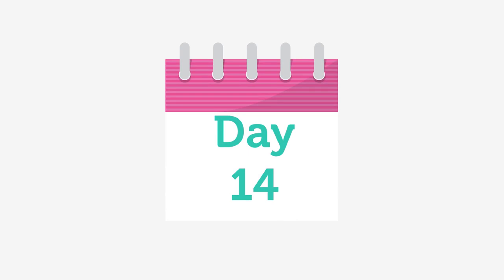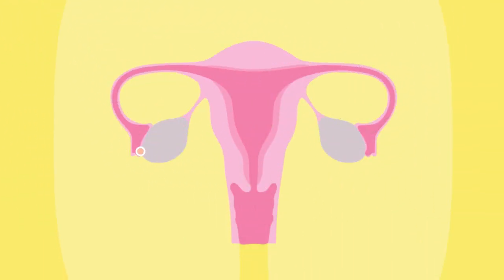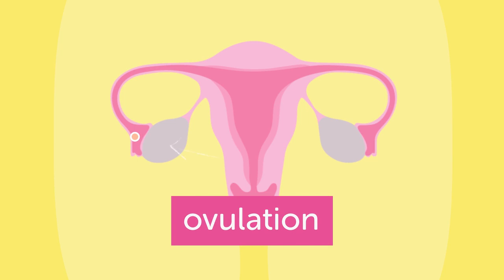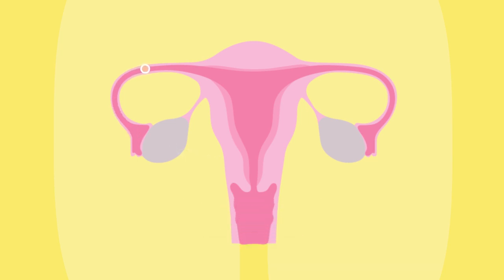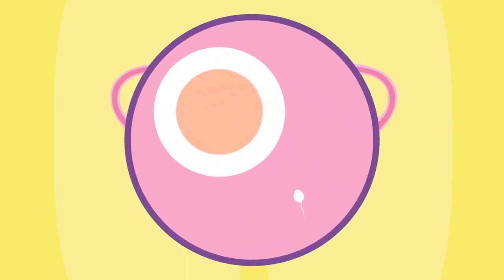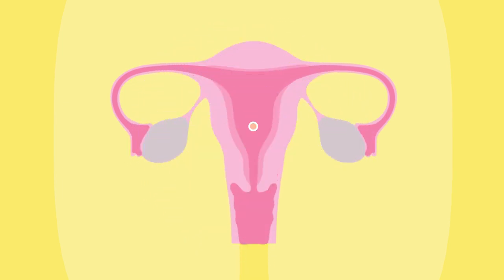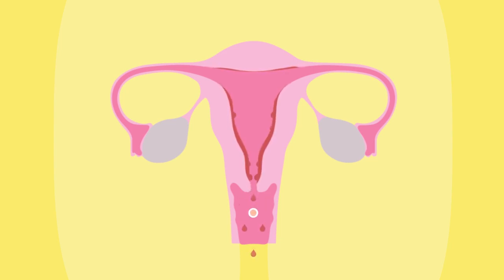At about day 14, the mature egg cell is released from the ovary. This is called ovulation. The egg cell travels down the fallopian tube towards the uterus. If the egg cell meets and joins with a sperm cell, it is fertilized — it attaches to the lining of the uterus and the woman becomes pregnant. If the egg cell does not meet with a sperm cell, the lining of the uterus begins to break down and the cycle repeats.